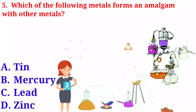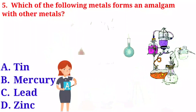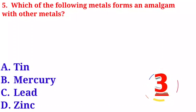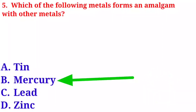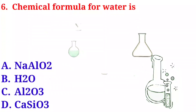Question number five: which of the following metals forms an amalgam with other metals? Option A: tin. Option B: mercury. Option C: lead. Option D: zinc. The correct answer is option B, mercury.